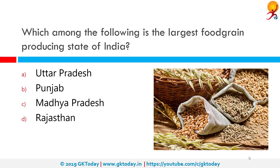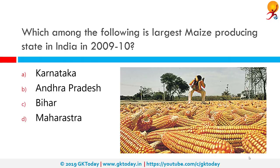Which among the following is the largest food grain producing state of India? The correct answer is Uttar Pradesh, which produces 43.2 million tons of food grains every year, followed by Punjab, then Madhya Pradesh, then West Bengal and so on. Which among the following is the largest maize producing state in India in 2009-10? The correct answer is Karnataka, which produced 3 million tons of maize, closely followed by Andhra Pradesh, then Maharashtra, then Bihar, then Rajasthan, then Tamil Nadu, Madhya Pradesh and so on.